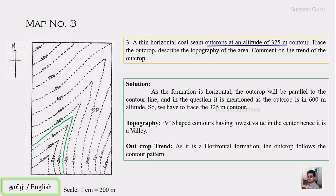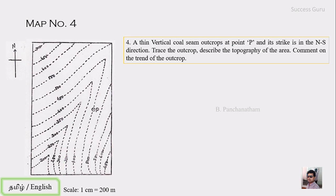Let's go to map number four, which has a north arrow and a scale, and is a contoured map. The question is: a thin vertical coal seam outcrops at point P and strikes in a north-south direction. Trace the outcrop, describe the topography of the area, and comment on the trend of the outcrop. This is quite different from the previous three cases.